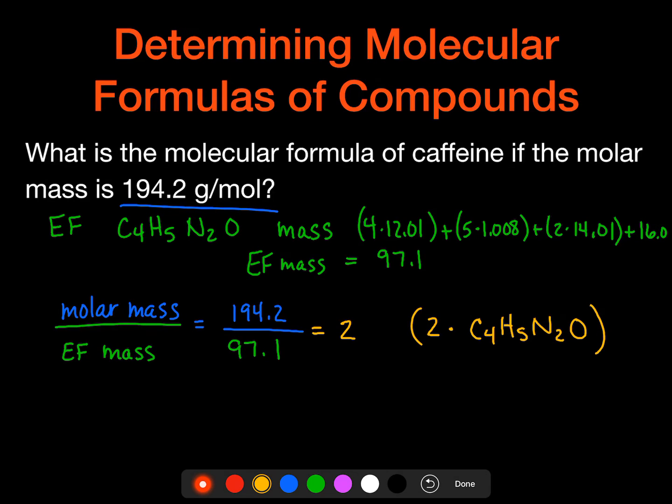And so when we multiply that whole thing by 2, because of that factor, we get C8H10N4O2. And that is our molecular formula.